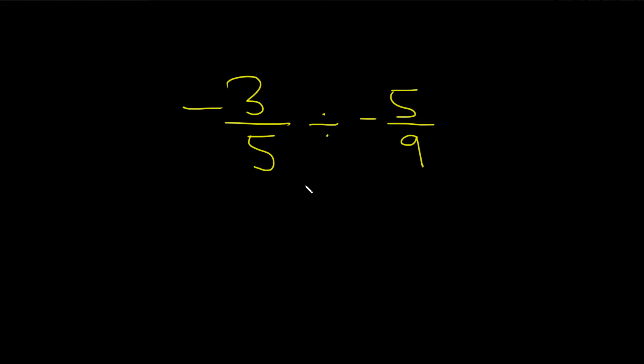Negative 3 over 5 divided by negative 5 over 9. This is a division problem with fractions, so we have to turn it into a multiplication problem.